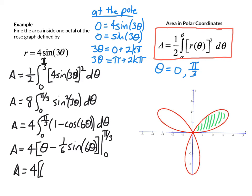So on the upper bound, we have pi over 3, pi over 3 minus 1 sixth times the sine of 2pi, which is 0. And then on the lower bound, we have 0 minus 1 sixth times the sine of 0, so that's 0 on the lower. Which gives us the result that the enclosed region is 4pi over 3.